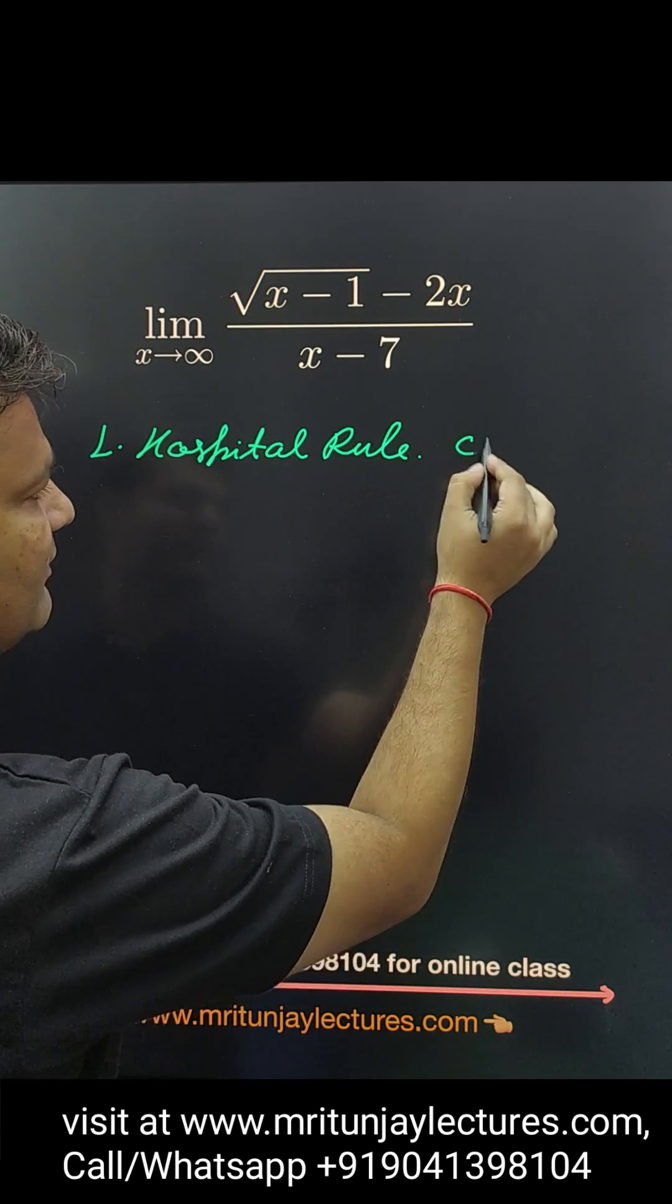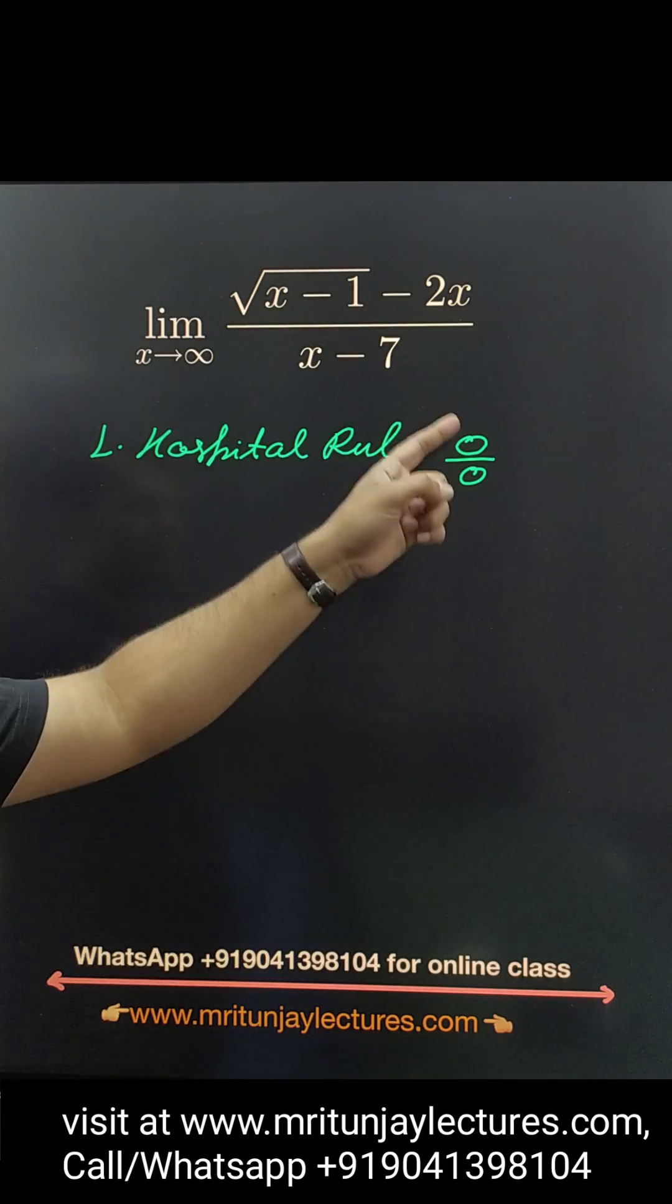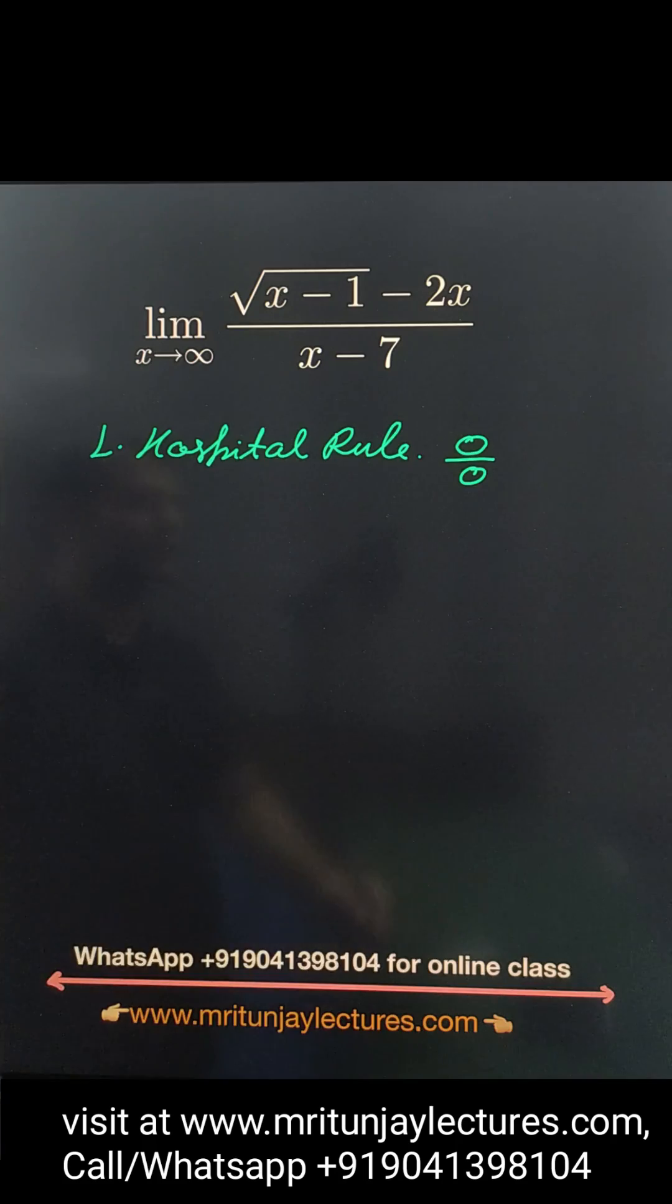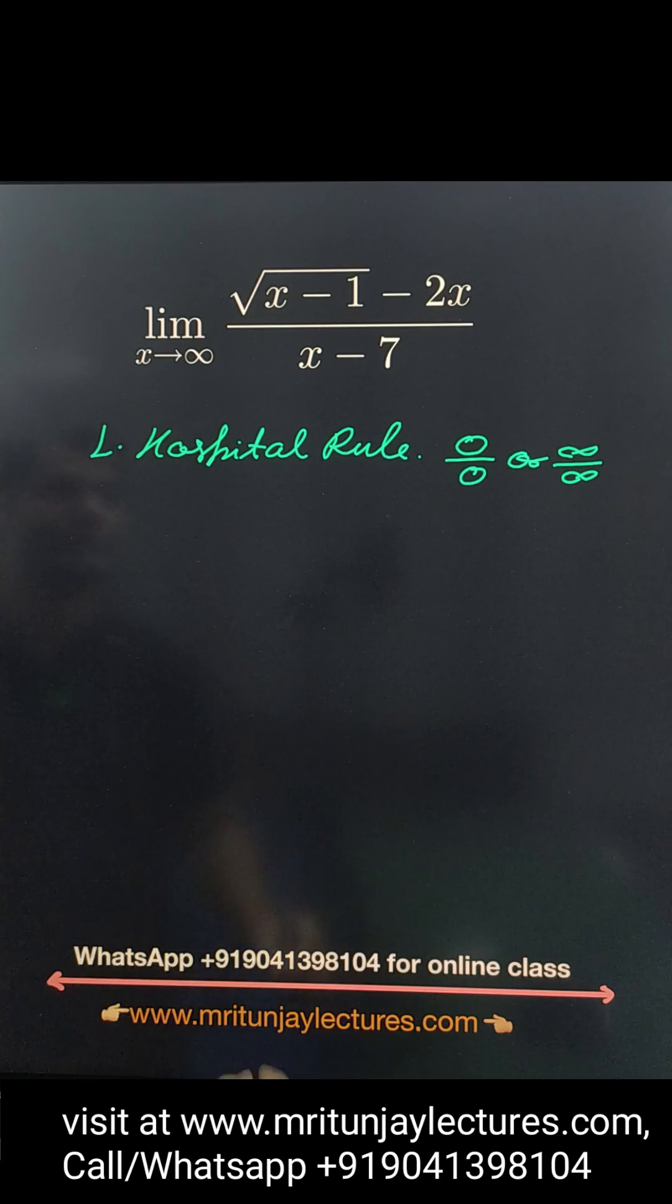This rule is valid for if you put x equal to infinity, then we got 0 by 0 or infinity by infinity form and that is called indeterminate form.